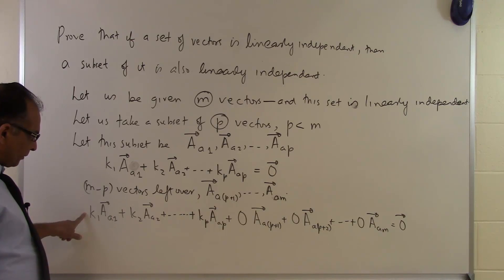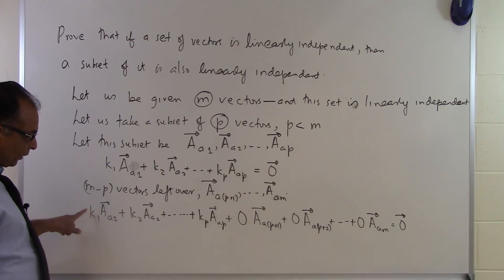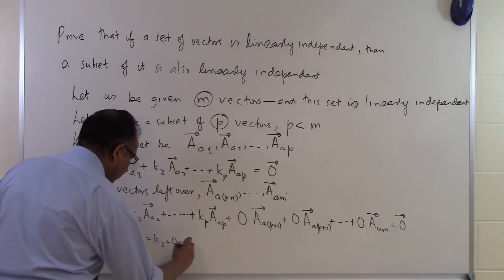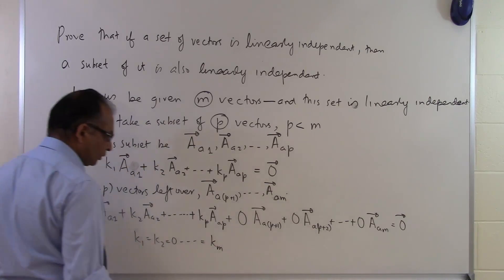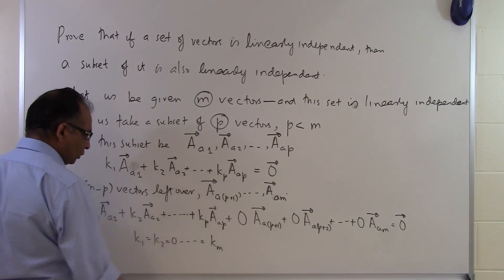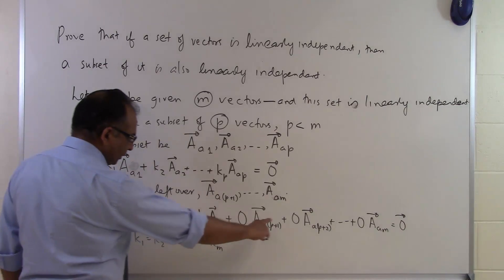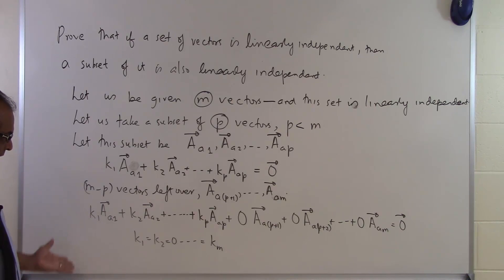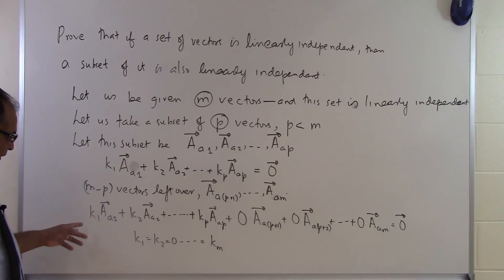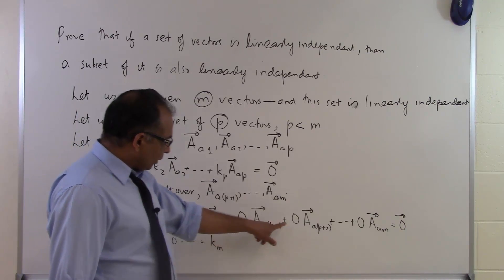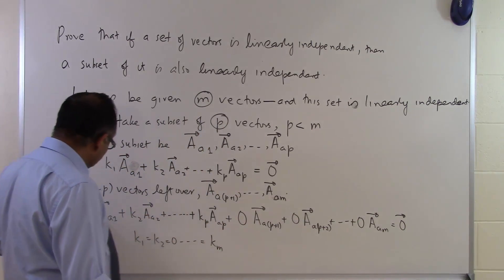But now this is a linear combination of all m vectors set equal to the zero vector. Since all m vectors are linearly independent, the only possible solution is k1 = 0, k2 = 0, all the way up to km = 0. The coefficients on the remaining vectors were already assumed to be 0, so those are automatically satisfied, meaning this is the only solution possible.